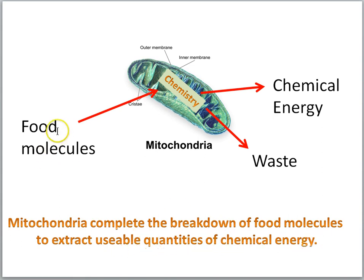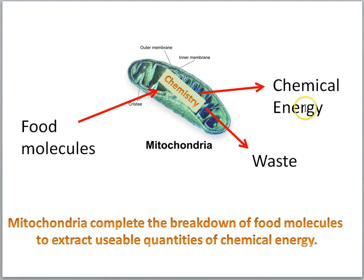The food molecules enter the mitochondria, complex chemistry goes on here, waste is eliminated, and the result of this chemistry is usable quantities of chemical energy.